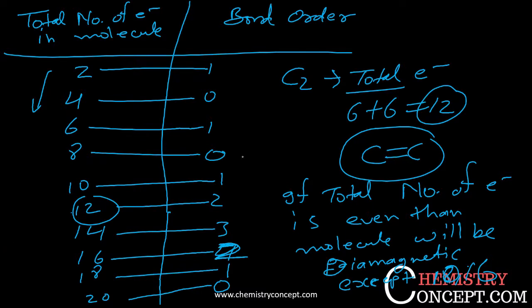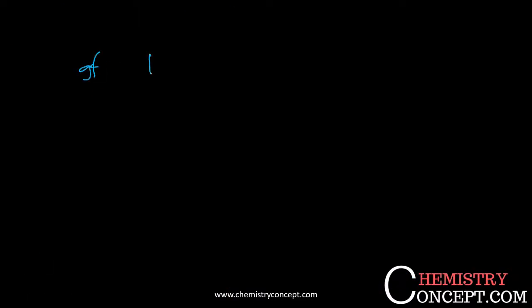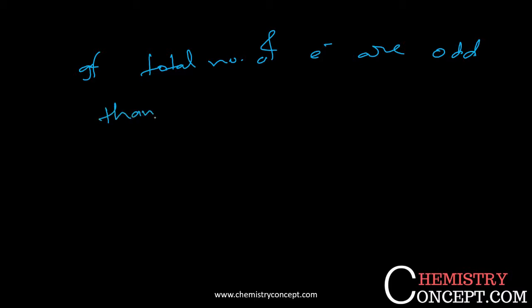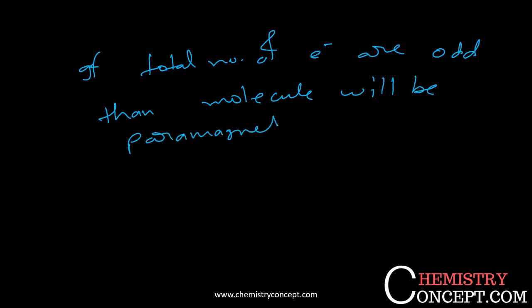When the total number of electrons is odd, the molecule will be paramagnetic. That's the simple trick you can use to find the magnetic property within a second.